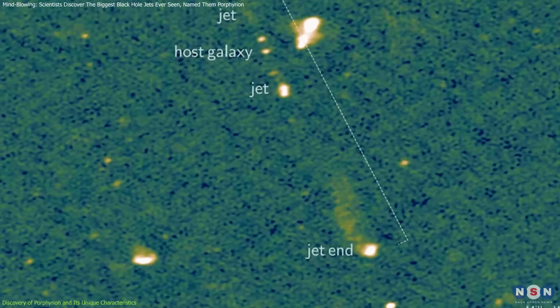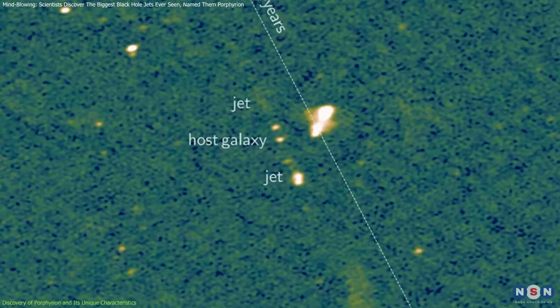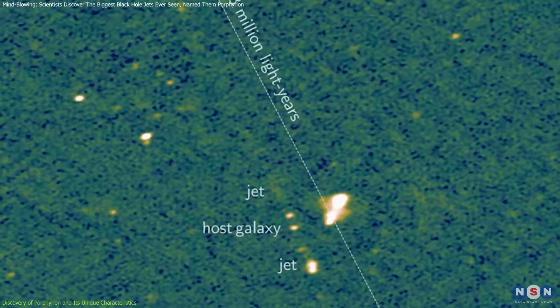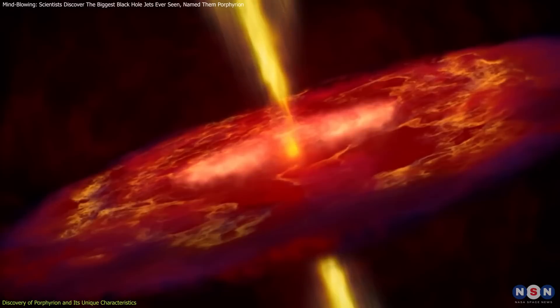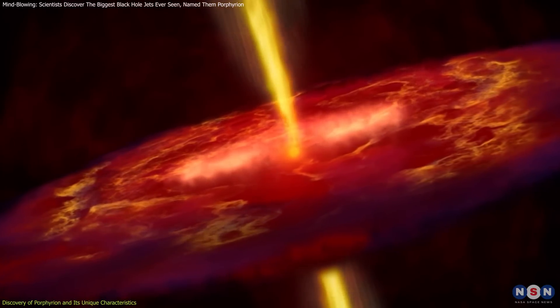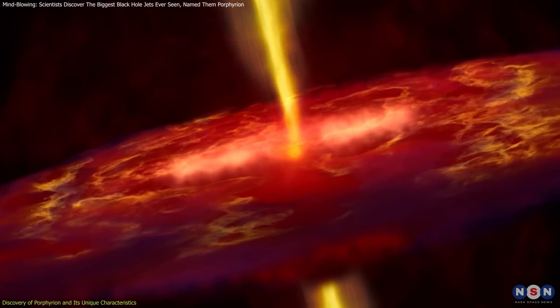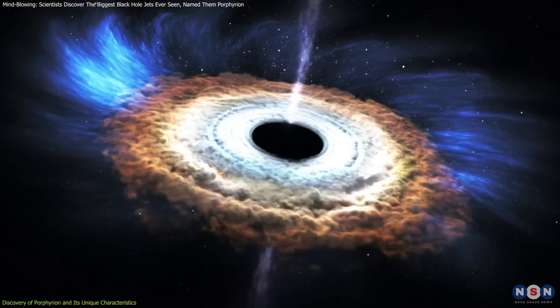What makes Porphyrion truly remarkable isn't just its size, but its near-perfect straightness. Black hole jets usually encounter obstacles like intergalactic clouds, magnetic fields, or cosmic winds.